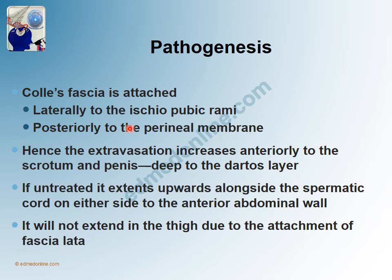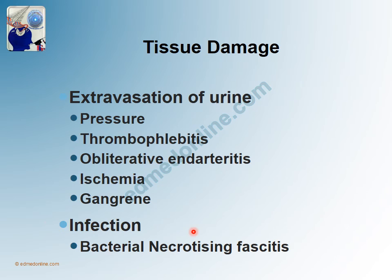Outside Buck's fascia, the extravasation is limited by Colles' fascia. Colles' fascia is attached laterally to the ischiopubic rami and posteriorly to the perineal membrane, so the extravasation is limited posteriorly by the perineal membrane. As it increases, it extends anteriorly toward the scrotum and penis, deep to the dartos layer. If still untreated, it then extends upward alongside the spermatic cord and up the anterior abdominal wall, but does not extend laterally into the thigh because of the attachment to the fascia lata.